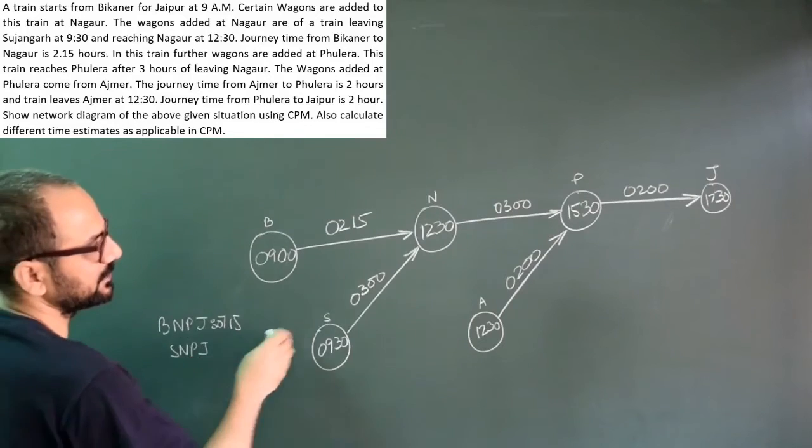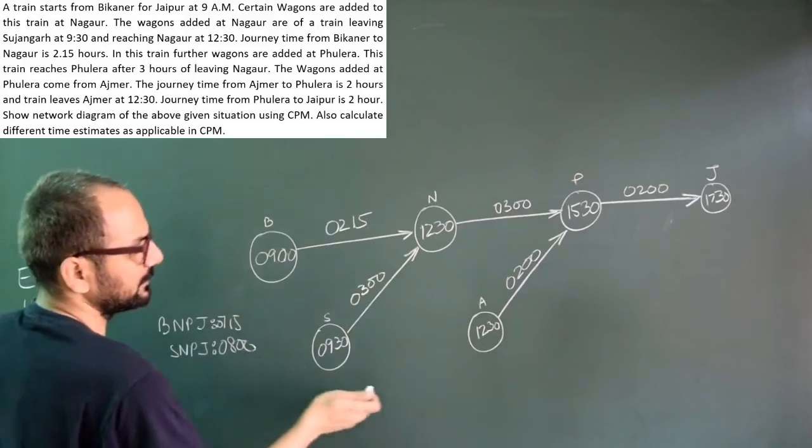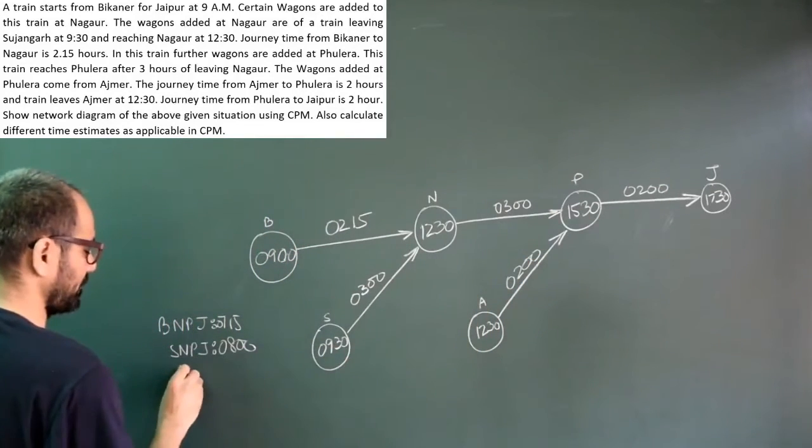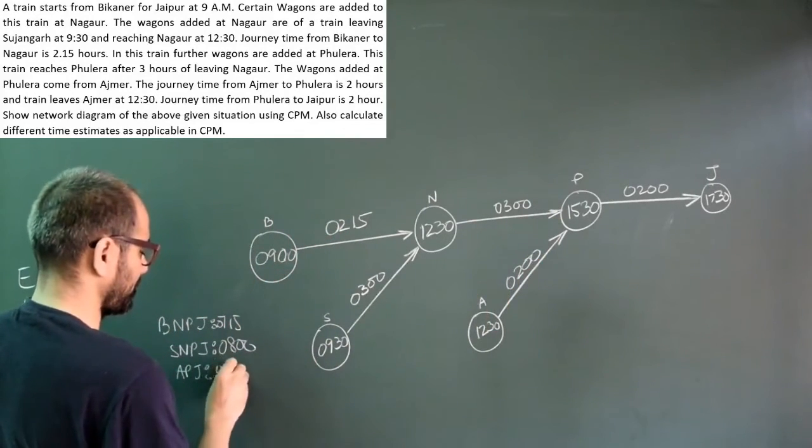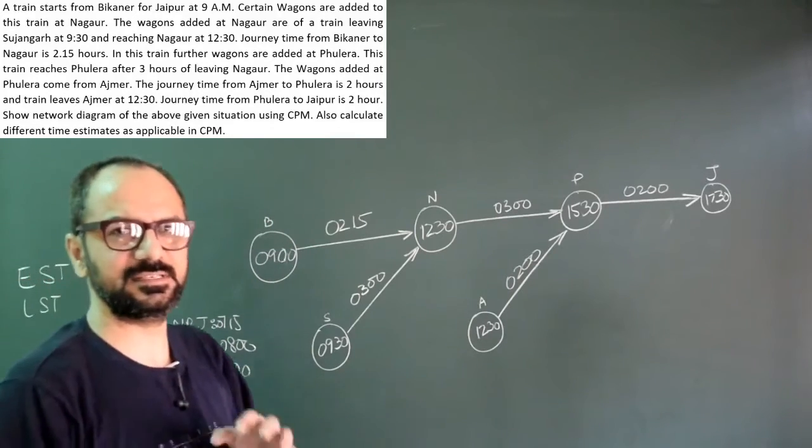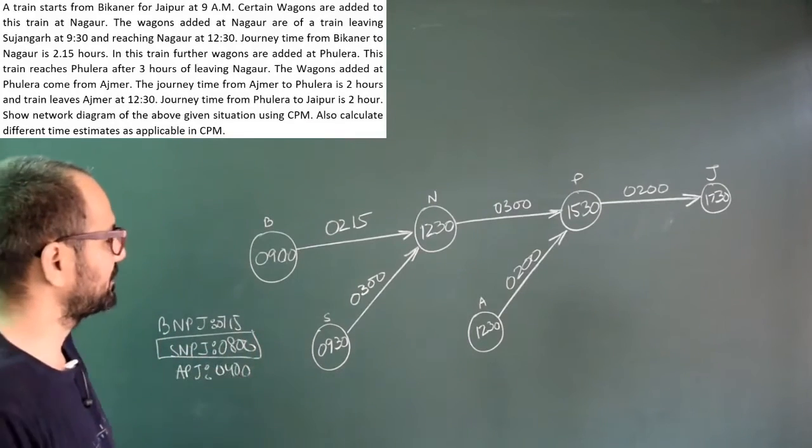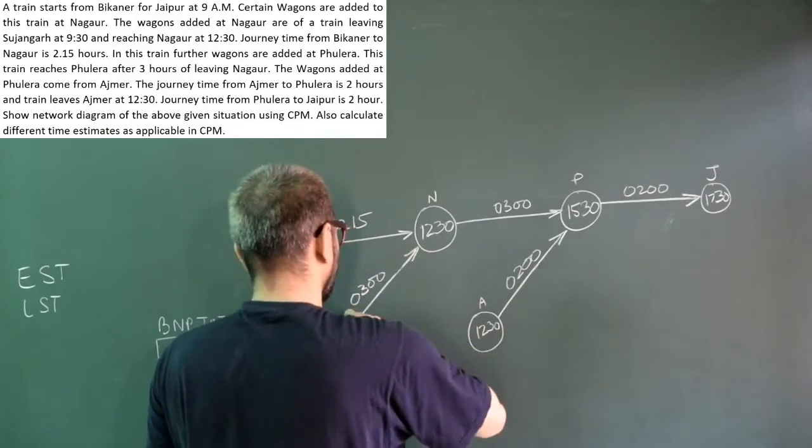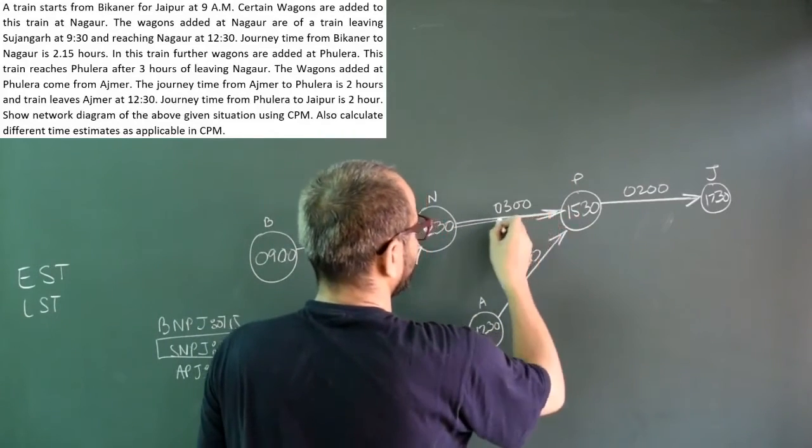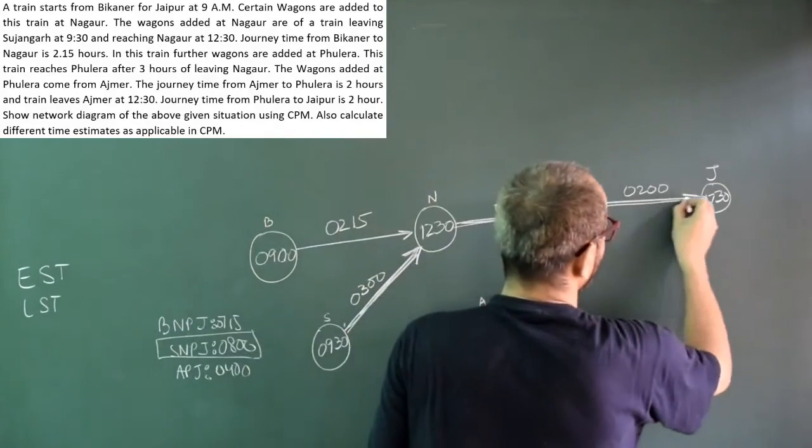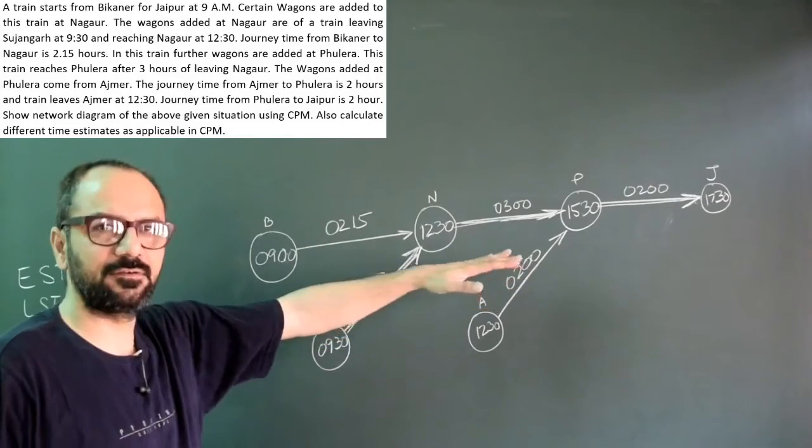Then we have Sujanagad, Nagore, Phulera and Jaipur. It is taking 3 hours, 3 hours, 6 and 2, 8 hours total. And then there is Ajmer, Phulera and Jaipur, taking 4 hours. The concepts remain the same. Which is the longest path? This is my critical path, SNFJ, Sujanagad Nagore Phulera Jaipur. We represent the critical path by double arrows.